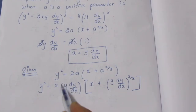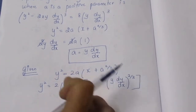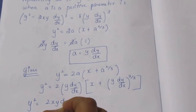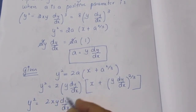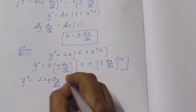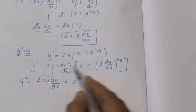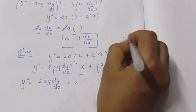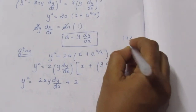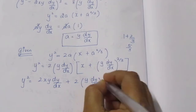Multiplying out, y² = 2xy·dy/dx plus 2(y·dy/dx)·(y·dy/dx)^(2/3). Counting the exponents: 1 plus 2/3 gives 5/3. So y² minus 2xy·dy/dx = 2(y·dy/dx)^(5/3).